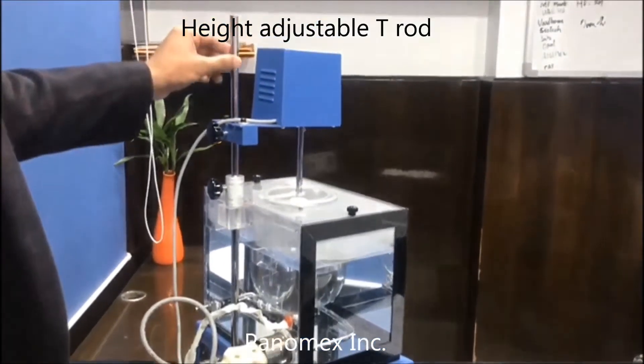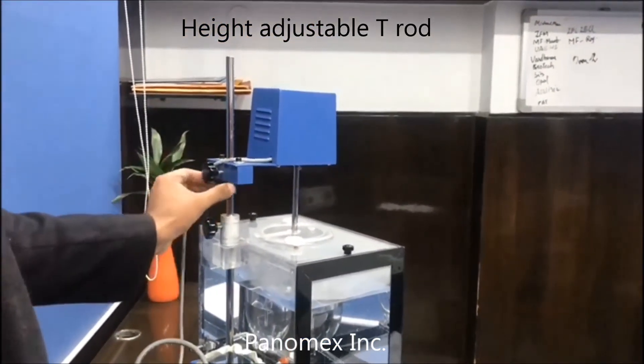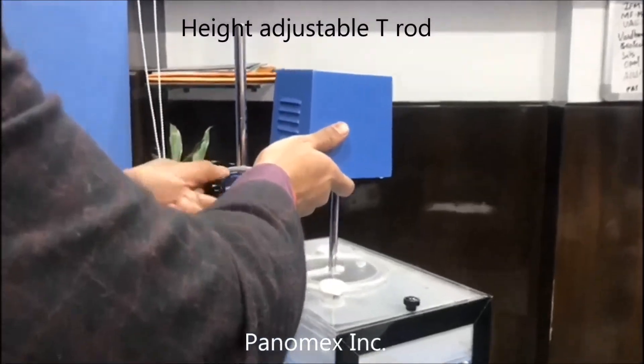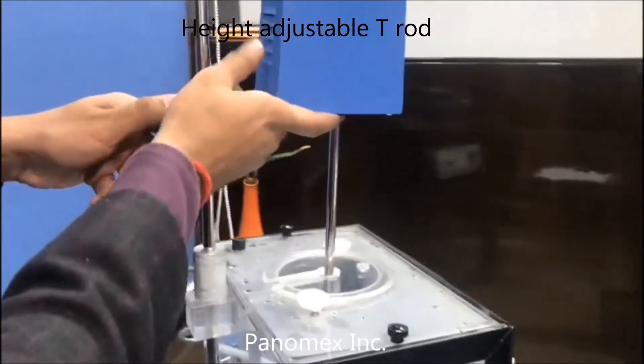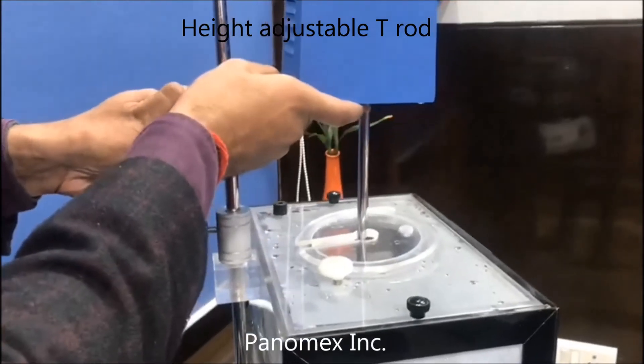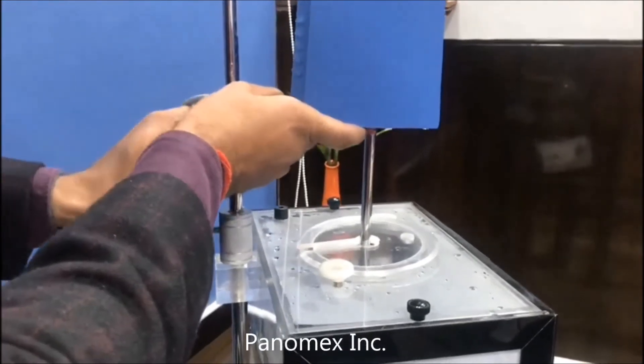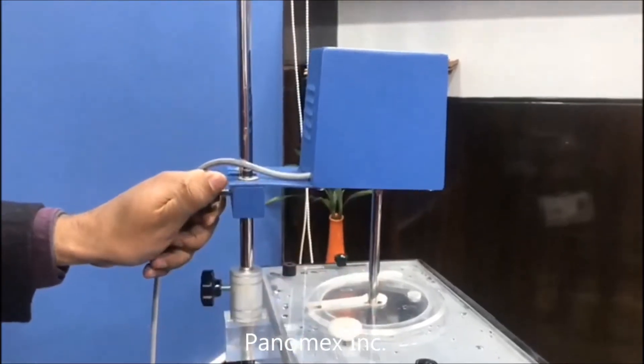This is the T rod. You can adjust it like this. As you can see, when you are adjusting it, the stirring machine is moving, which you can adjust as per your need and requirement.